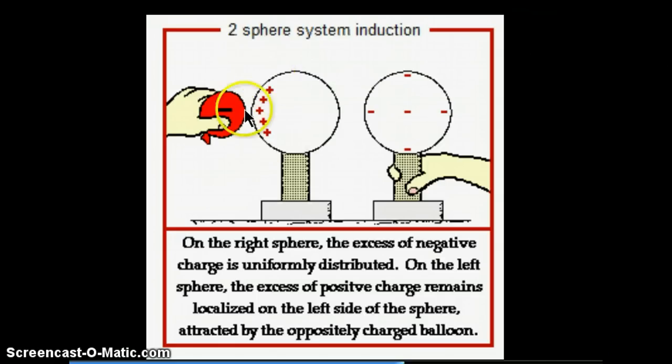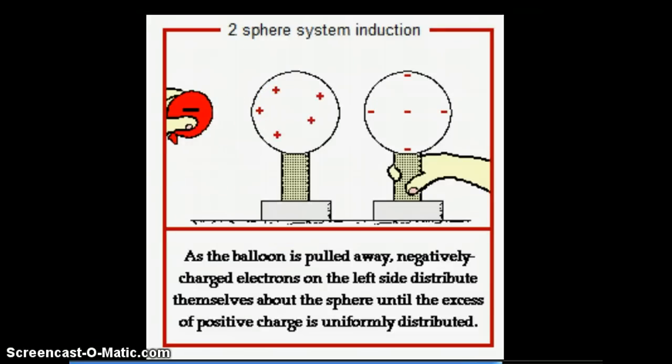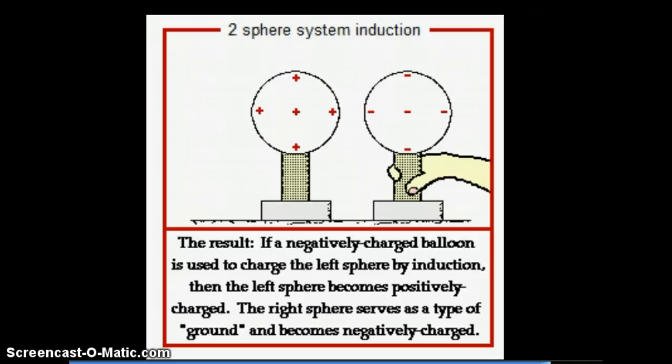Opposites are going to attract, so you're going to have the positive charges here, whereas any balancing negative charges would be on the other side. Once we take the balloon away, we are back to the result of a positive charge on the sphere that we were charging.